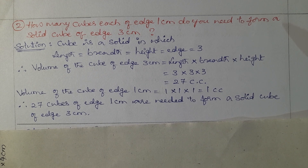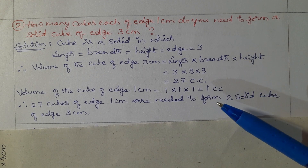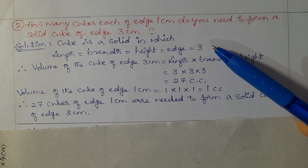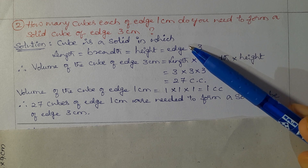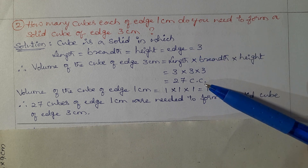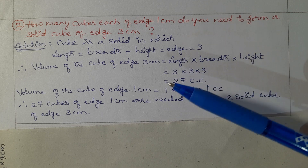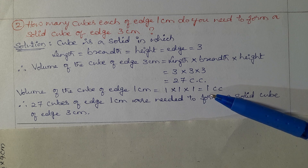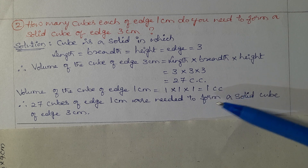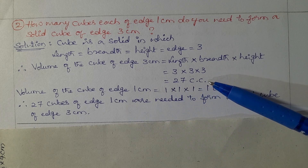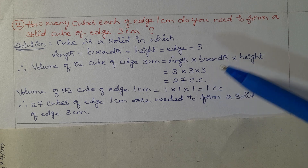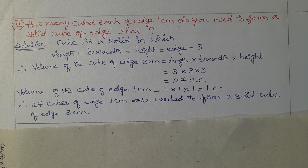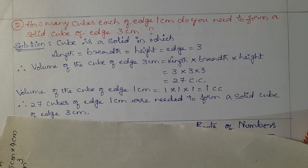So, volume of the cube of edge 1 centimetre is equal to 1 cubic centimetre. Therefore, 27 cubes of edge 1 centimetre are needed to form a solid cube of edge 3 centimetres. Thank you so much.